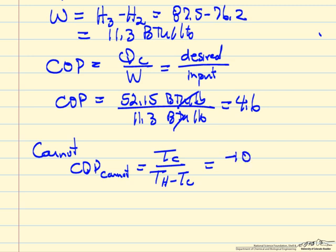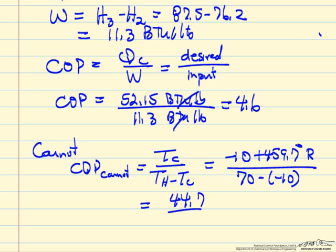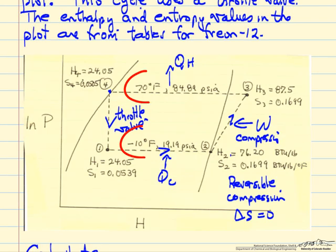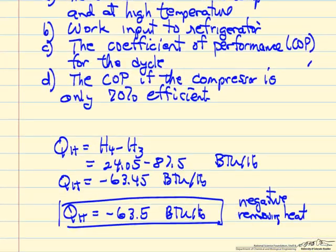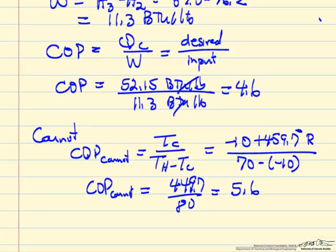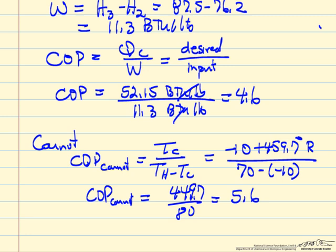So low temperature is minus 10, and we add 459.7 to make it degrees Rankine. Since we are looking at temperature differences, we don't actually have to use the absolute temperatures. So 449.7 over 80 is 5.6. The best we could do between this high temperature of 70 degrees and this low temperature of minus 10 is 5.6 if we ran a Carnot cycle between those.